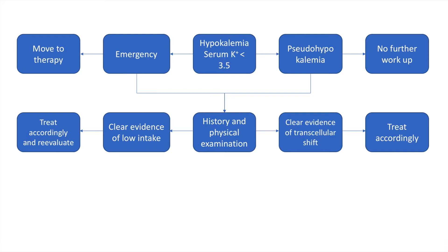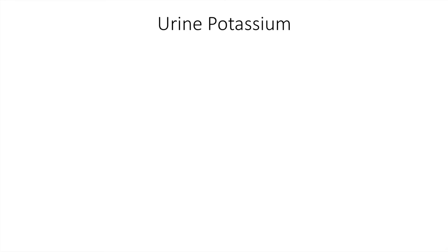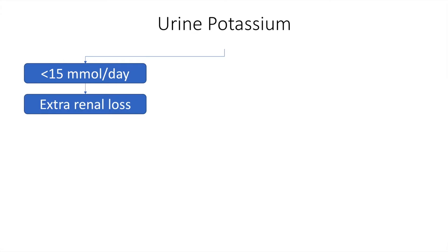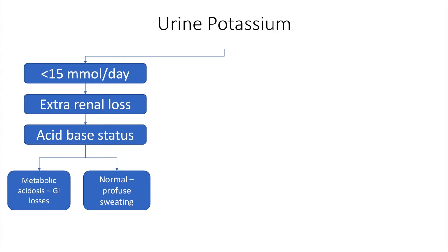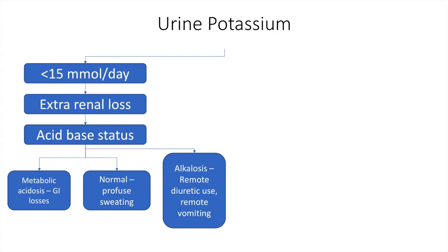If these possibilities have been ruled out, we proceed to a urine potassium measurement. Urine potassium is an important part of the diagnostic evaluation. If the 24-hour urine potassium is less than 15 millimoles, the cause is non-renal or extra-renal, and we must assess the patient's acid-base status. If the patient is acidotic, they are likely losing bicarbonate in the stool due to diarrhea, causing extra-renal potassium loss with metabolic acidosis. If acid-base status is normal, increased sweating or athletic activity may be the cause. If the patient is alkalotic, consider diuretic use or vomiting.